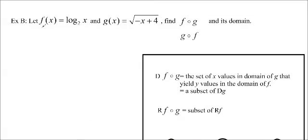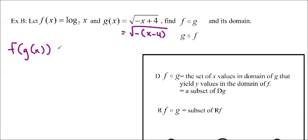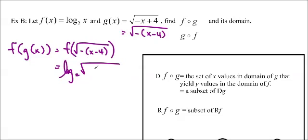So let's try Example B: let f of x equal log base 2 of x and g of x equals root of negative x plus 4. We want to find f of g and its domain, and g of f and its domain. First I'm going to rewrite g of x in factored form — root of negative x minus 4. Then to find f of g of x, we replace g of x with root of negative x minus 4, and then substitute that into f of x.